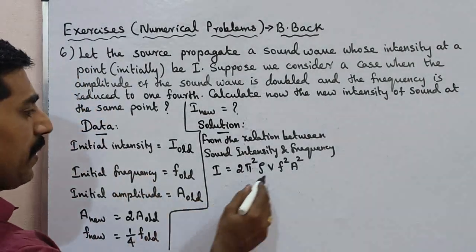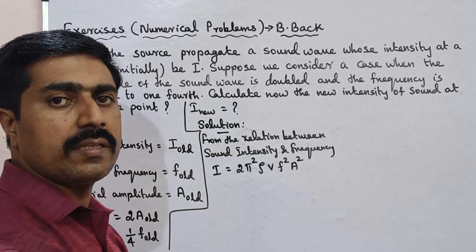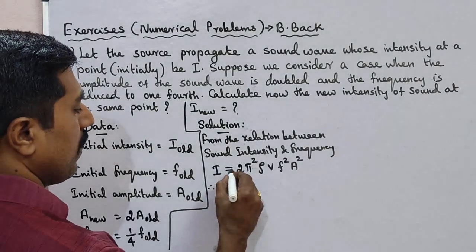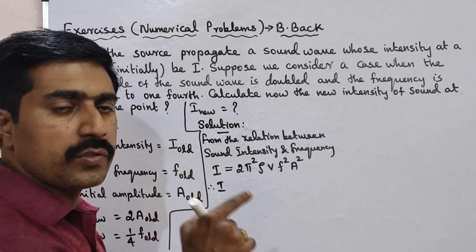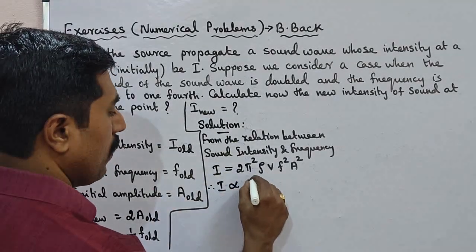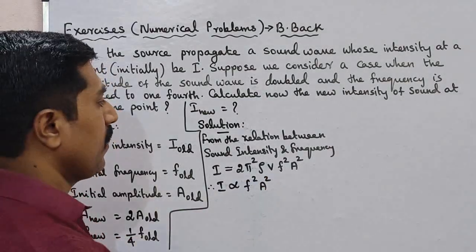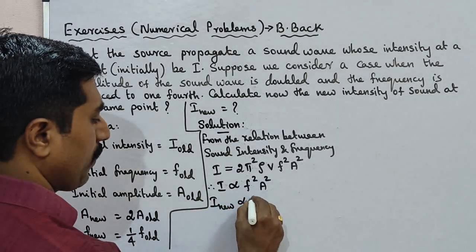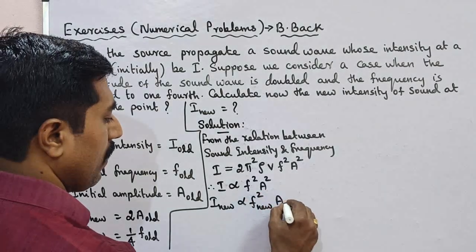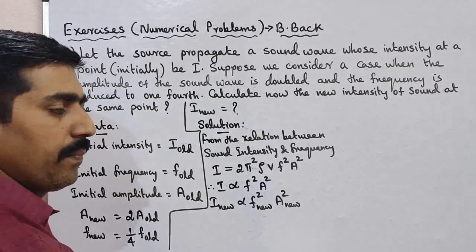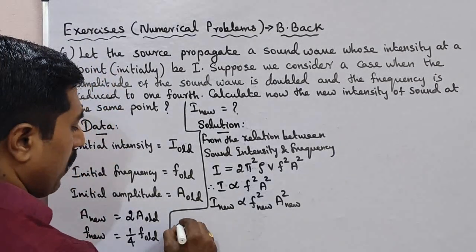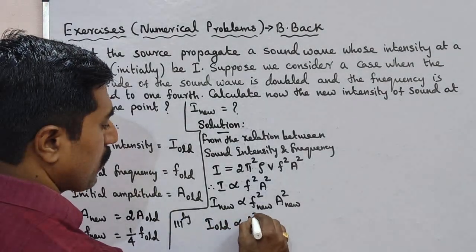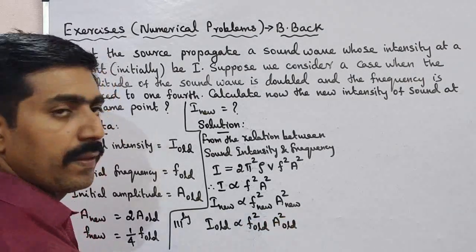If we treat everything except f and A as constant, then I is directly proportional to f² A². So: I new is directly proportional to F new squared times A new squared, and I old is directly proportional to F old squared times A old squared.